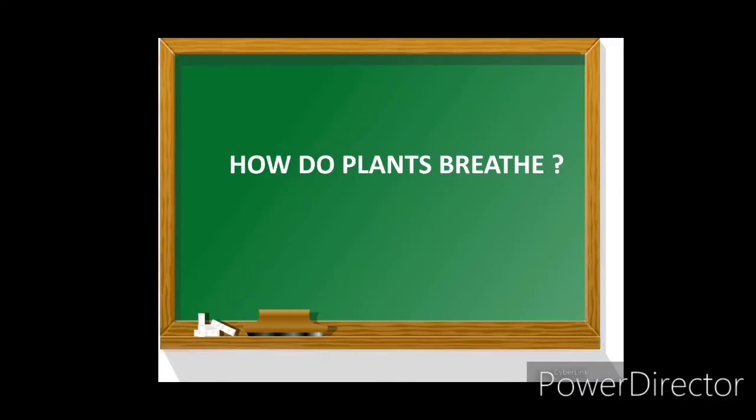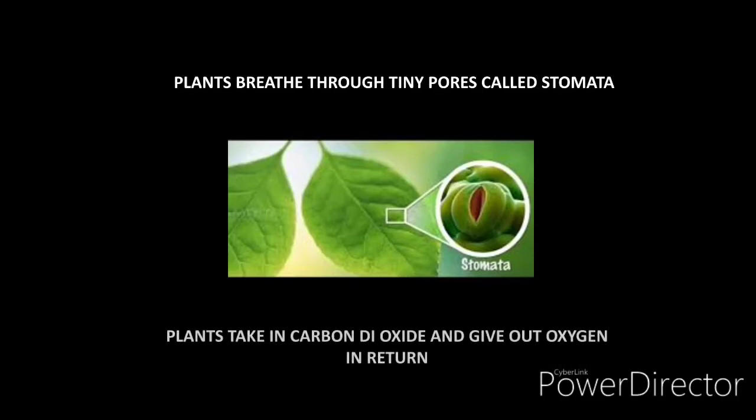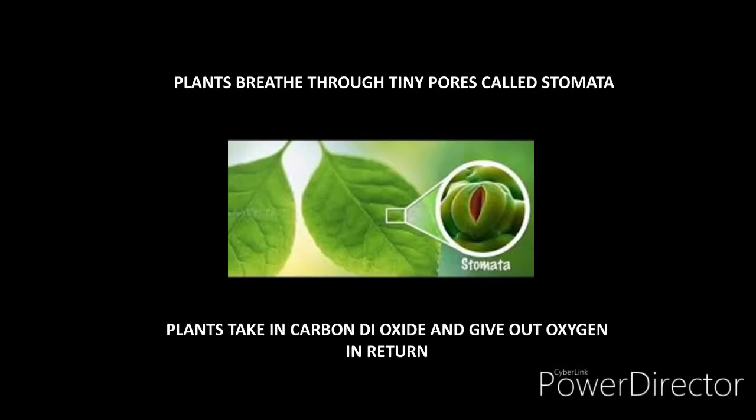Now we will study how plants breathe. Plants breathe through their tiny pores called stomata. Stomata is a small hole or pore present on the underside of the leaf. Like we have nose to breathe, plants have small holes called stomata through which plants can breathe. Plants take in carbon dioxide gas and give out oxygen gas in return.